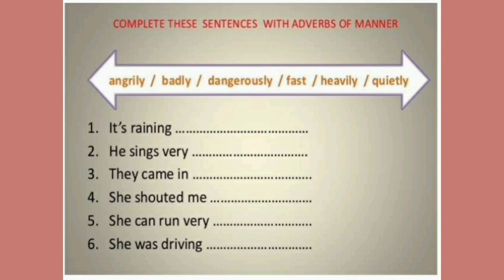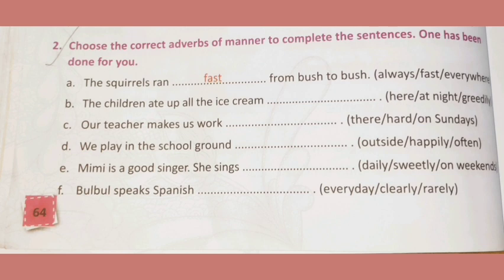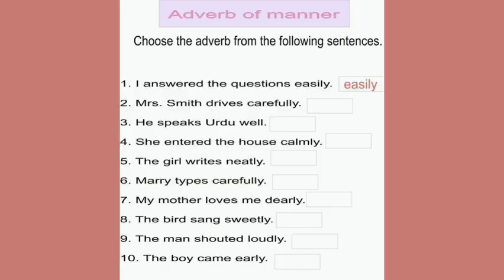There are 6 options and 6 questions — you need to do it on your own. This is page number 64 of your language book. Also, choose the correct adverb of manner to complete the sentences — one has already been done for you. For example: 'The squirrels ran ___ from bush to bush' — options: always, fast, everywhere. Do the full exercise from page 64.